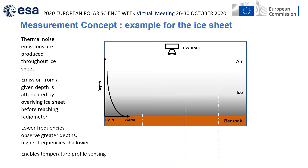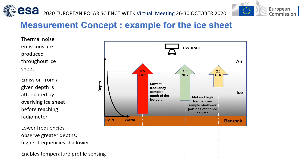How does the system work? Here is an example for the ice sheet. The lowest frequency, 0.5 GHz, samples much of the ice column from the top to the bottom, while the higher and mid frequencies — 1 and 2 GHz — sample shallower portions of the ice column.